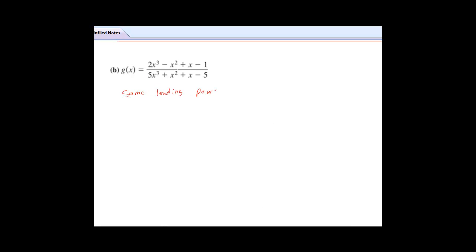Now, when you have the same leading, when the powers of your leading terms are the same, something else happens. And we're only concerned for really big values of x, so we're going to find the limit as x approaches infinity of this function g of x. We just look at our leading terms, 2x cubed over 5x cubed.